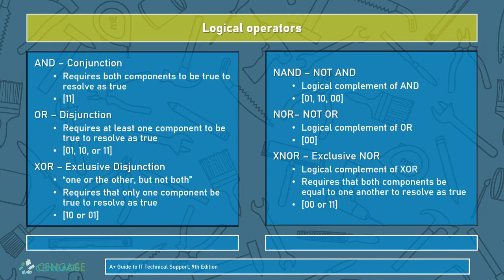For an OR — a disjunction — this requires that at least one component be true rather than both. So while 1,1 would still work just as it would with an AND, we can also use 0,1 or 1,0. The third is the XOR, or exclusive OR — also called an exclusive disjunction — which is one or the other, but not both. This requires that only one component be true. So we can't have 1,1, but we can have 1,0 or 0,1.